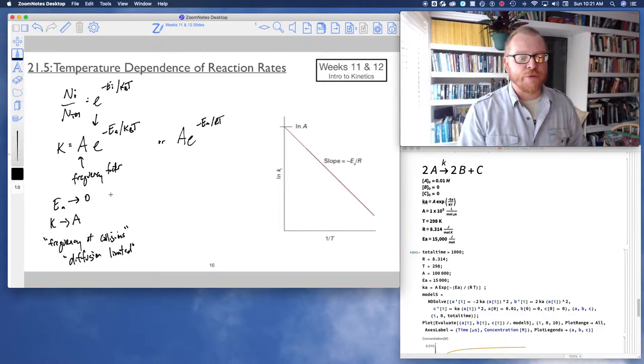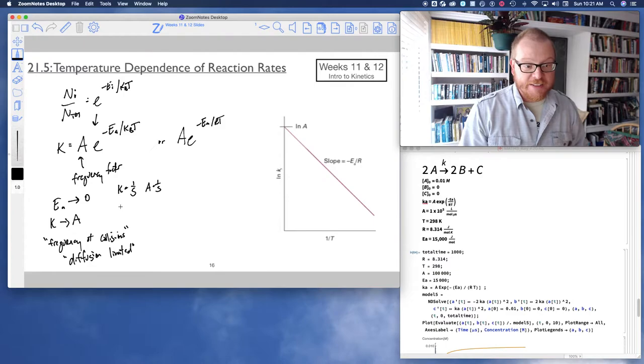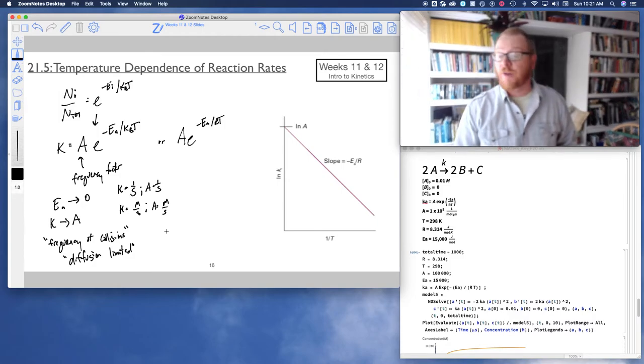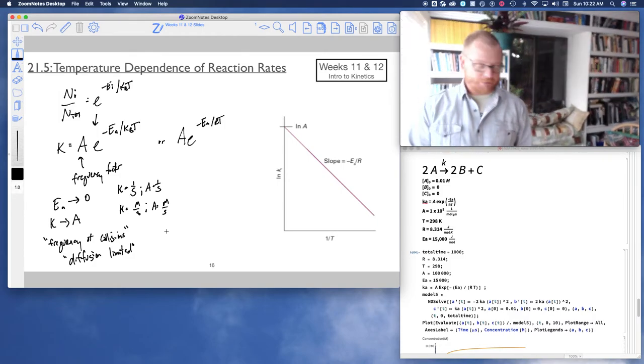So A, for a first order reaction, we know that k is one over seconds, so A will be one over seconds for first order. In a second order reaction, we know that k is molarity per second, so that means A will also be molarity per second for a second order reaction. So k and A will have the same units.